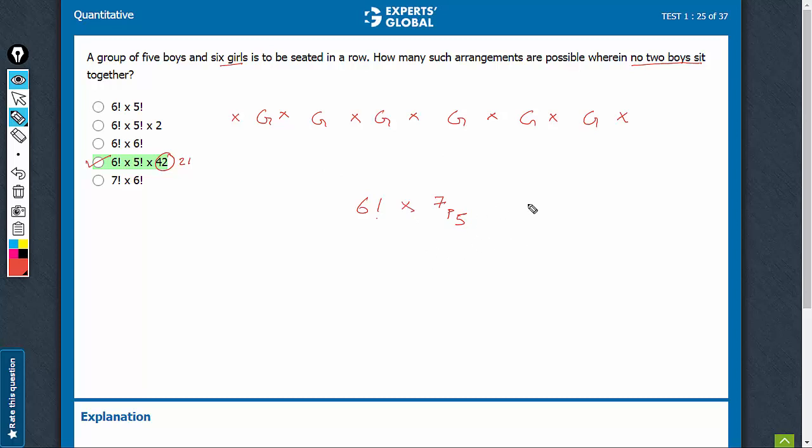Simplify this. 7P5 is 7 factorial over 2 factorial, which is 7 times 6 over 2, times 5 factorial. Combined with the 6 factorial, this gives 6 factorial times 5 factorial times 21. That would be option D.